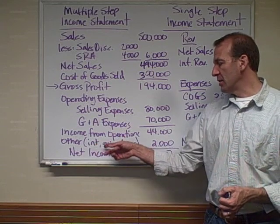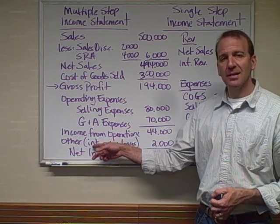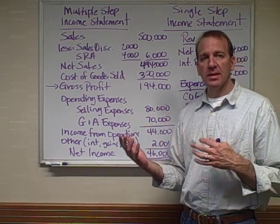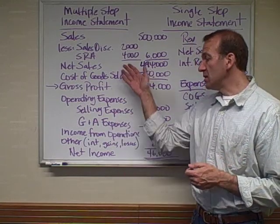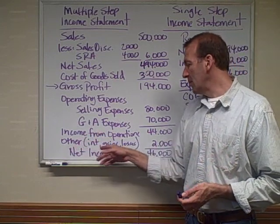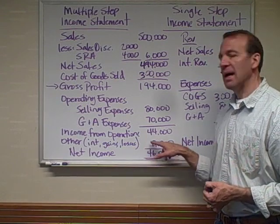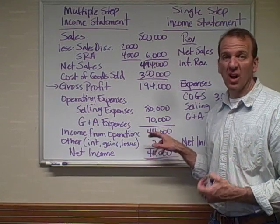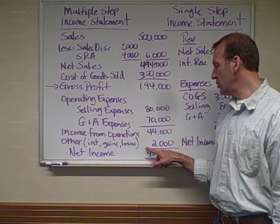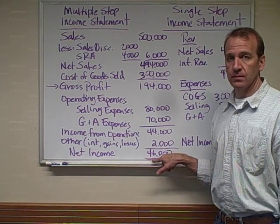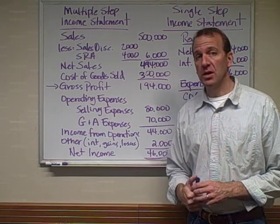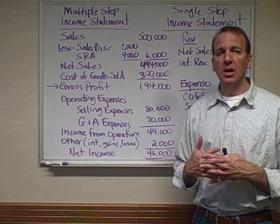Now we take our other items — which could be interest expense, interest revenue, gains, losses, any other revenues, expenses, gains, or losses not listed above. A lot of times you would detail these out, but I ran out of room and lumped them together. I'm going to assume this is $2,000 of interest revenue. So $44,000 plus $2,000 of interest revenue gives us net income of $46,000. This is the multiple-step income statement — very detailed, with lots of information for calculating ratios and doing analysis.